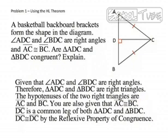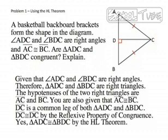Now, since segment DC is a common leg of triangles ADC and BDC, segment DC is congruent to itself by the reflexive property of congruence. So the answer to problem one is yes: triangle ADC is congruent to triangle BDC by the Hypotenuse-Leg Theorem.